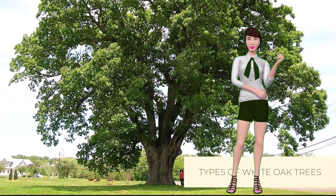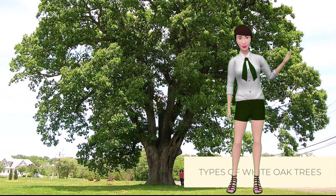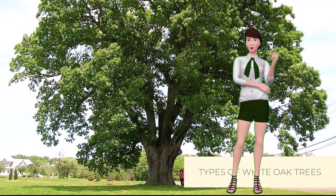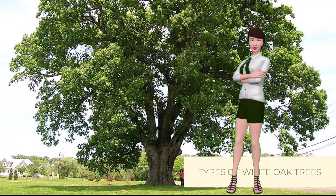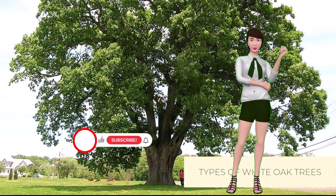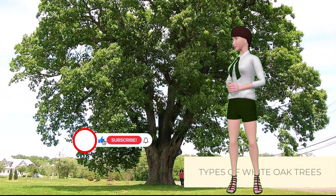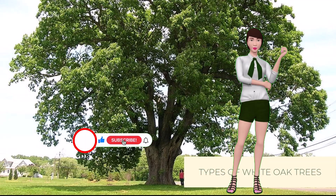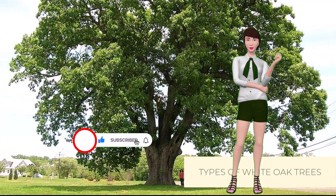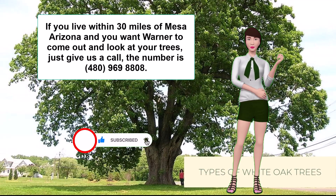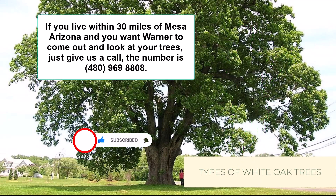Well, that's about it. I hope this helps you with your trees. Please subscribe to this channel and hit like. And if you live within 30 miles of Mesa, Arizona and you want Warner to come out and look at your trees, just give us a call. The number is 480-969-8808. Thanks and goodbye.